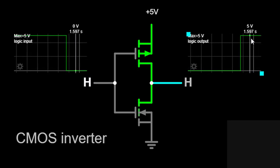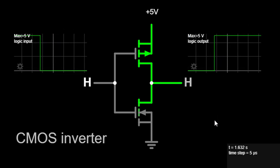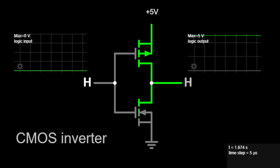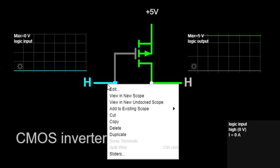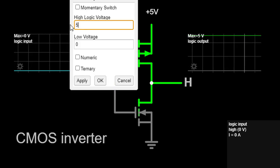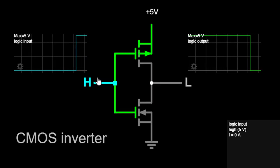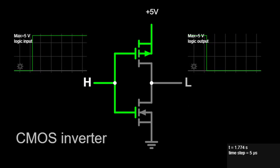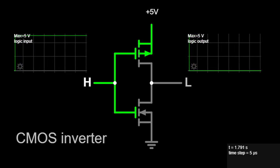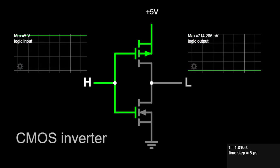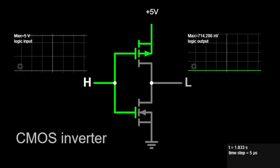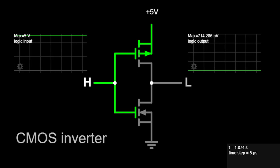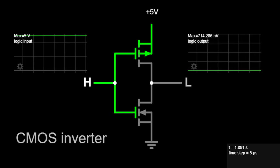Applications and Advantages. The applications of CMOS inverters are vast and extend across numerous digital systems. They are integral to the functioning of microprocessors, memory circuits, digital logic gates, and many more. CMOS technology offers several advantages that make it highly desirable in the industry. Some of the key advantages include: 1. Low power consumption - CMOS inverters exhibit low static power consumption as they consume power only during switching transitions, leading to enhanced energy efficiency.